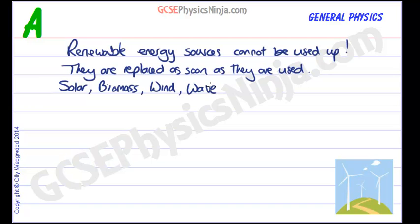We've got wave power — harnessing the energy of waves. And where do waves come from? They come from wind motion, which comes from the sun. It's amazing how many of these renewable sources actually come from the sun.